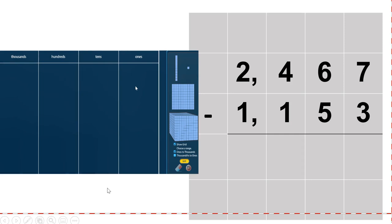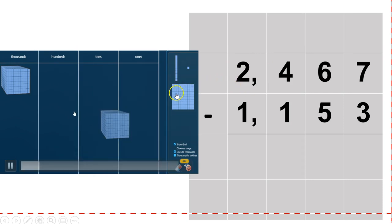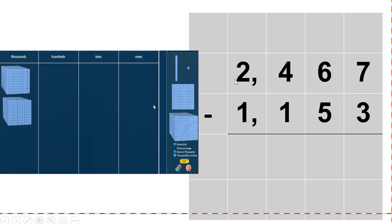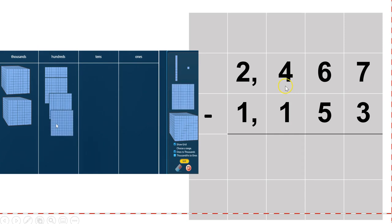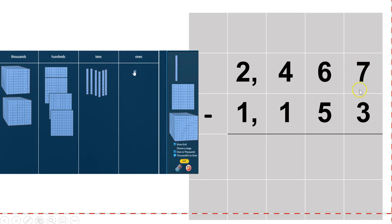When I'm subtracting, the first thing I want to do is build that top number. So I have 2,000, so I'm going to pull 2,000 blocks over. I have 4 hundreds — pull over 4 hundreds. I have 6 tens, and I'm going to pull 6 tens: 1, 2, 3, 4.